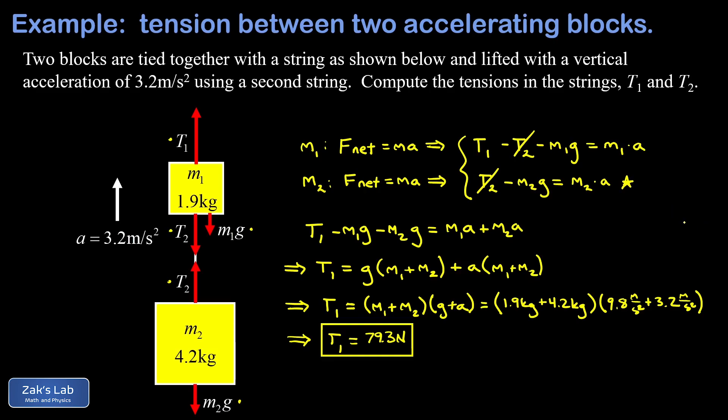We can factor the m2 out of this and we get m2 times the quantity (g plus a). Now we're ready to substitute some numbers: 4.2 kilograms multiplying the quantity (9.8 meters per second squared plus 3.2 meters per second squared). When we run the numbers to three significant digits, we get 54.6 newtons.